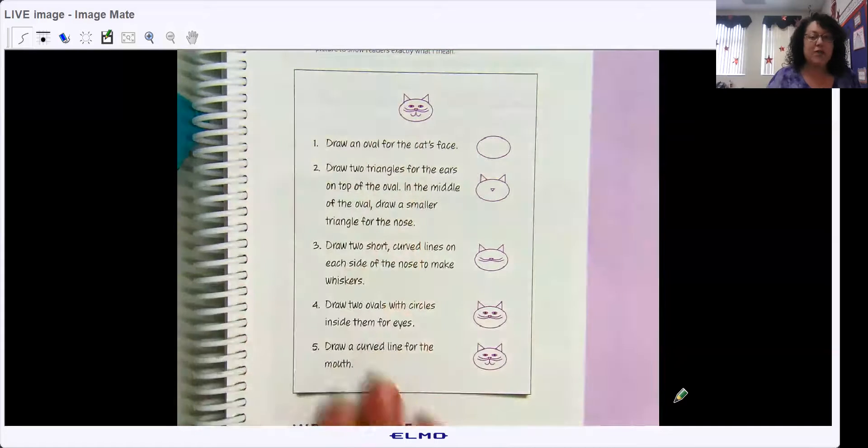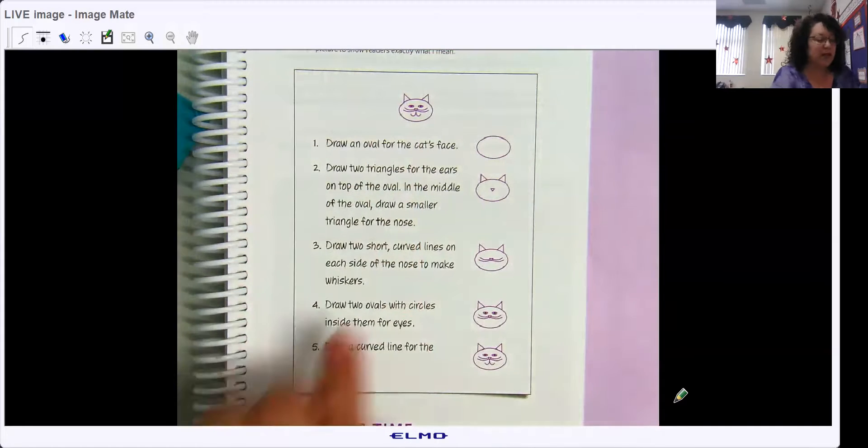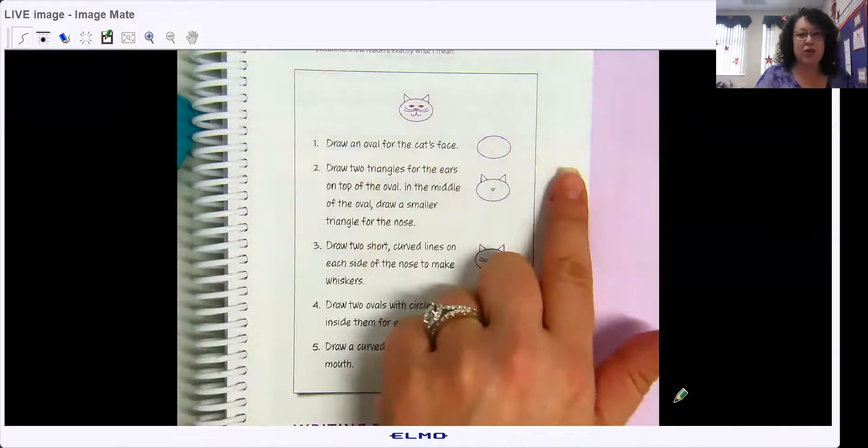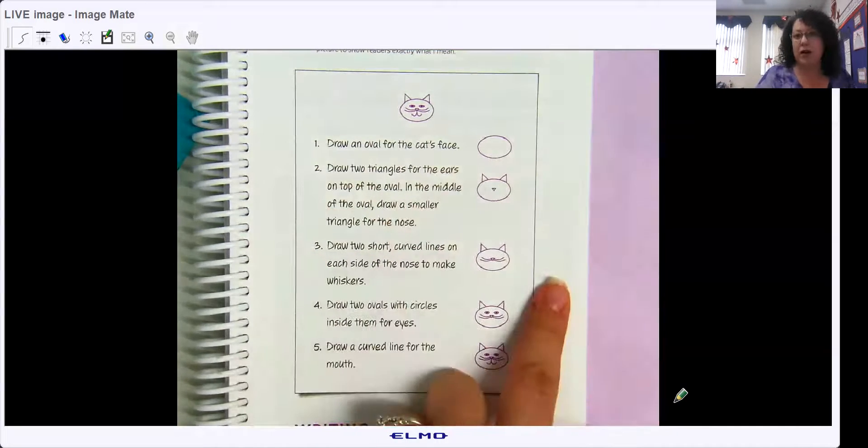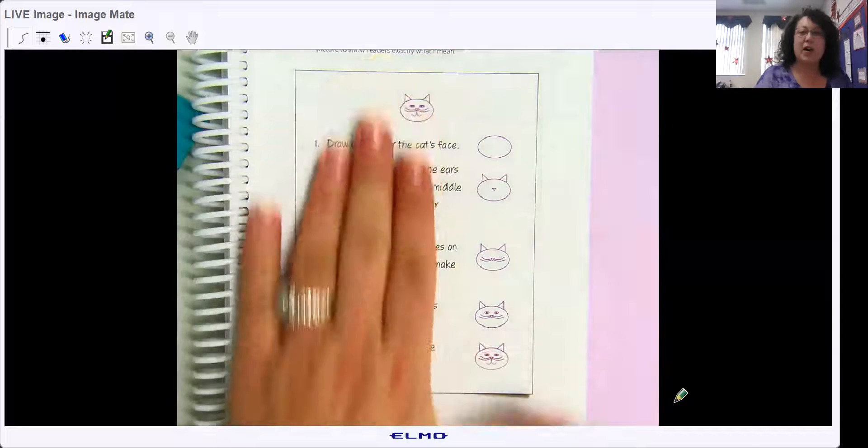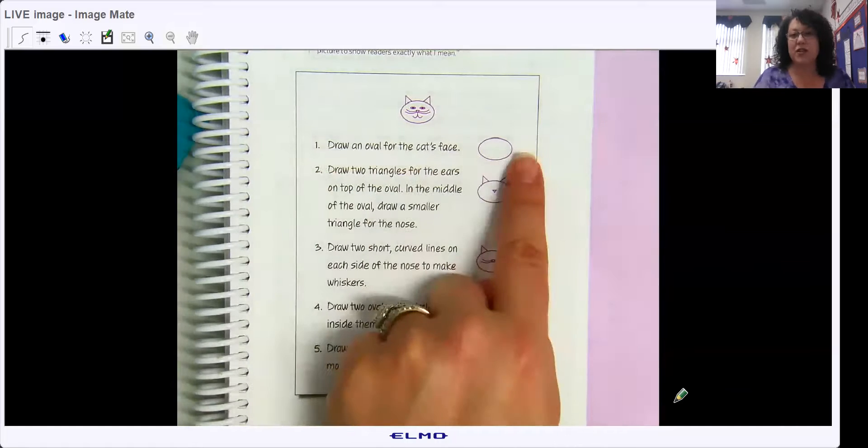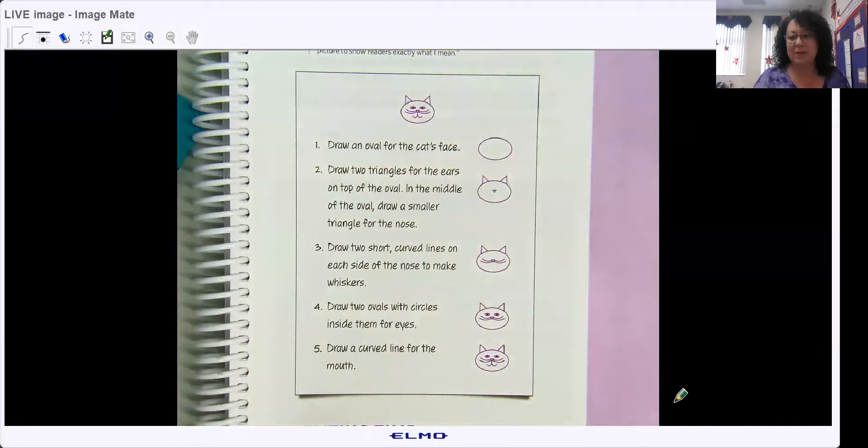So write your directions out. It's up to you. It's how your brain works. You might write the direction, draw it, direction, draw it, direction, draw it. Or you might write all the directions out first and then draw last. I personally think it would be best to write the direction and draw it. That way you don't miss a step. Okay?